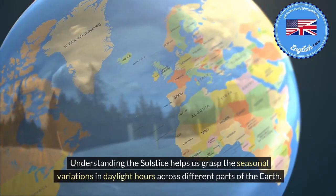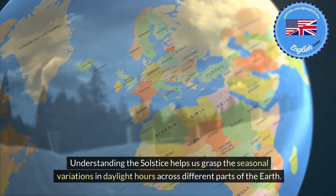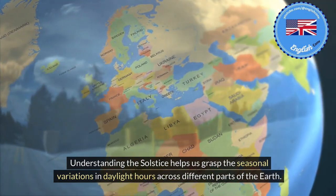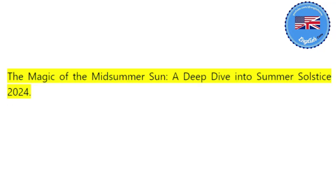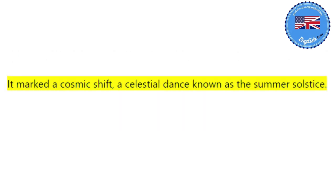Understanding the solstice helps us grasp the seasonal variations in daylight hours across different parts of the Earth. The magic of the midsummer sun: a deep dive into Summer Solstice 2024. June 20, 2024, wasn't just another Thursday. It marked a cosmic shift, a celestial dance known as the summer solstice.